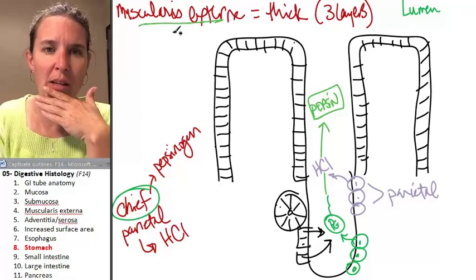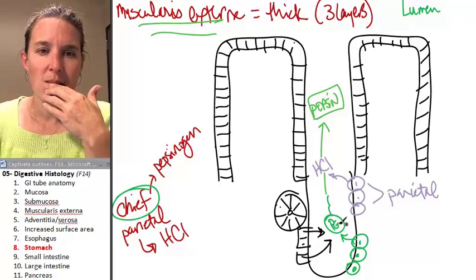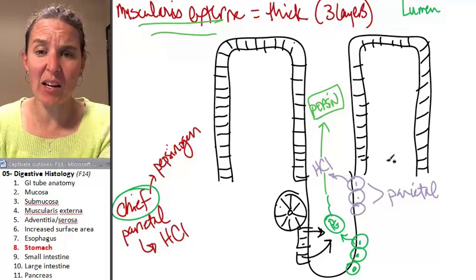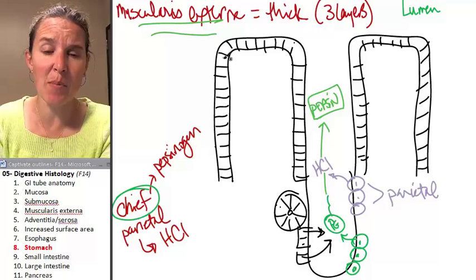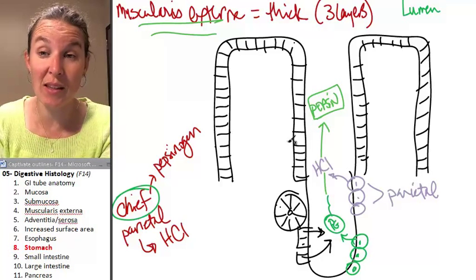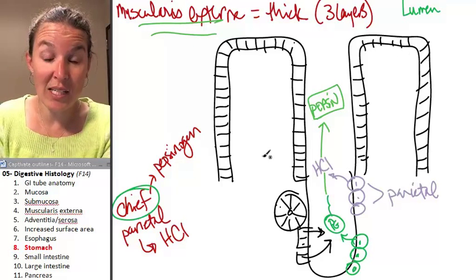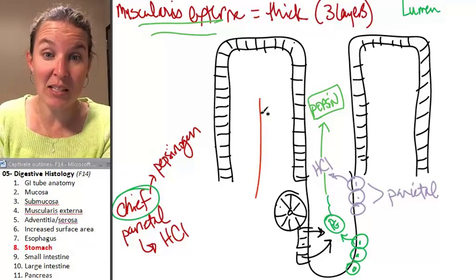I said the three layers of muscularis externa. Stomach tends to just be thicker. It looks like this is my epithelial tissue, which means what's deep to that, lamina propria, and what's deep to that, muscularis mucosae.